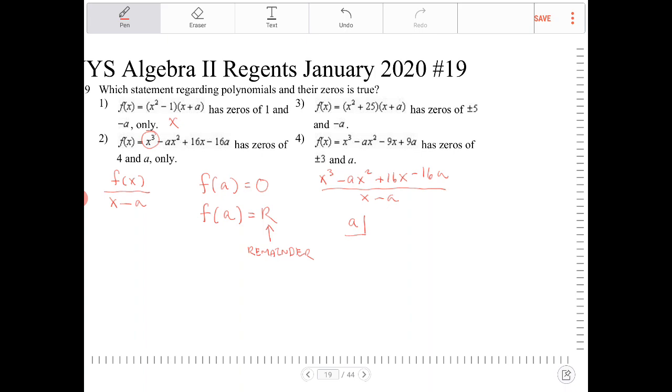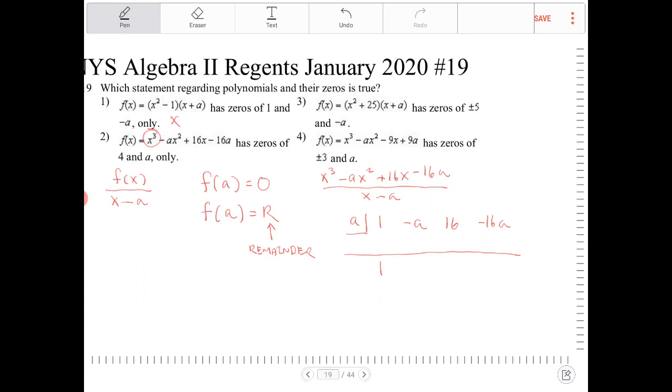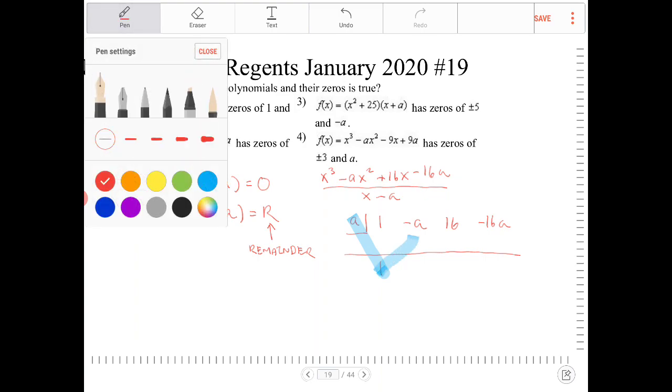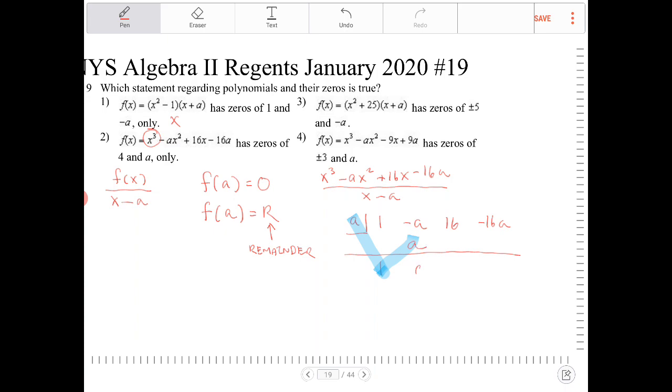So the synthetic division says this. I'm going to take a, which is what I think the root is, and I want to list out all the coefficients of the polynomial. I have 1, I have negative a, and then I have 16. And then the last term there, that's a constant, that's negative 16a. And what I want to do with this is, I am going to add 1 with 0, so that's 1. Take a times 1 and place that result over here. And what I end up with is a. I add the 2, I end up with 0. I do this again. a times 0 is 0. 16 plus 0 is 16. And then I do that again. a times 16, that's 16a. And the last number that I get here, by adding negative 16a and 16a together, I end up with 0. That is the remainder.